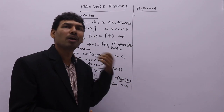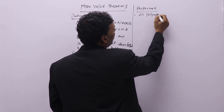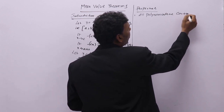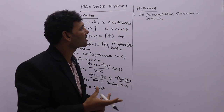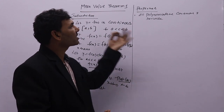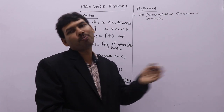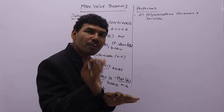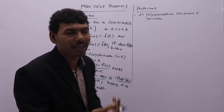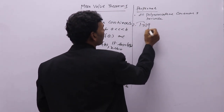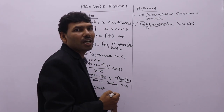If you remember these four properties, you can easily identify whether a function is continuous or derivable. Property 1: All polynomials are always continuous and derivable in any interval. Polynomials include f(x) = x, f(x) = x², f(x) = x² + 2x + 3, x³, etc. If you identify the given function is a polynomial, simply state it is continuous and derivable. Property 2: Trigonometric functions like sine and cosine are always continuous and derivable.